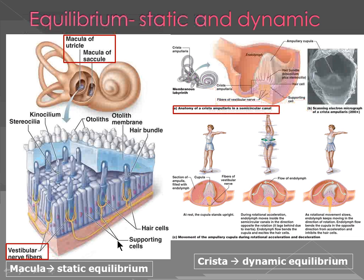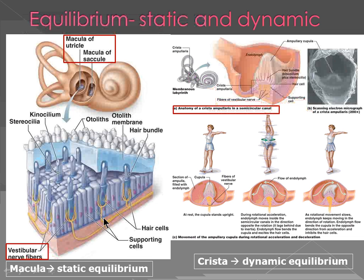For equilibrium, impulses pass out to the vestibular part of the eighth cranial nerve. In the saccule and utricle, the structure called the macula contains hair cells connected to bipolar neurons. On the surface of these hair cells is a thick gelatinous material called the otolithic membrane, which has calcium deposits on it. When you stop suddenly in a car, the otolithic membrane slides forward, distorting the hair cells, which stimulate nerve fibers going to the vestibular nerve and then to the cerebellum. This is linear, static equilibrium.